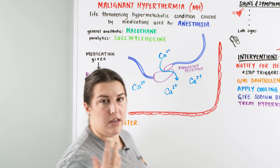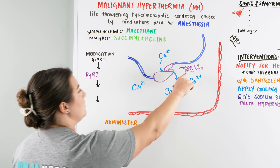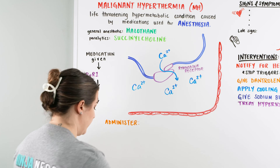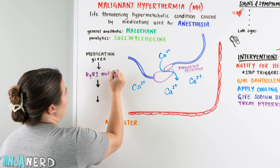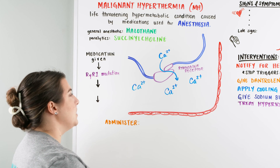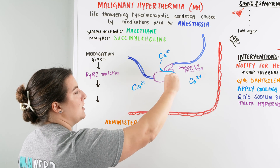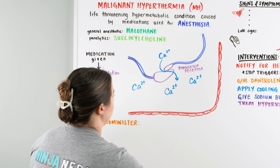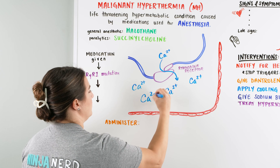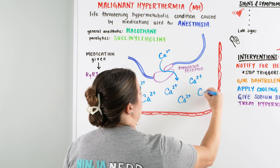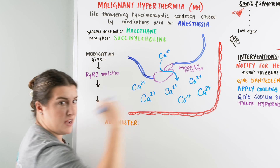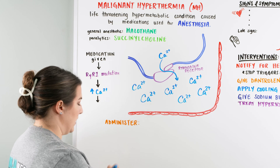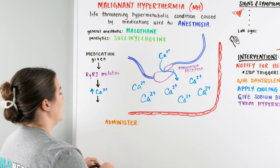In malignant hyperthermia, we have a mutation in the ryanodine receptor, commonly abbreviated RYR1. When there is this mutation and we give these medications, the receptor is activated to the point where it cannot close. Because it stays open, we're going to have an influx of even more calcium — all this calcium floods into our muscle, causing a very prolonged contraction.